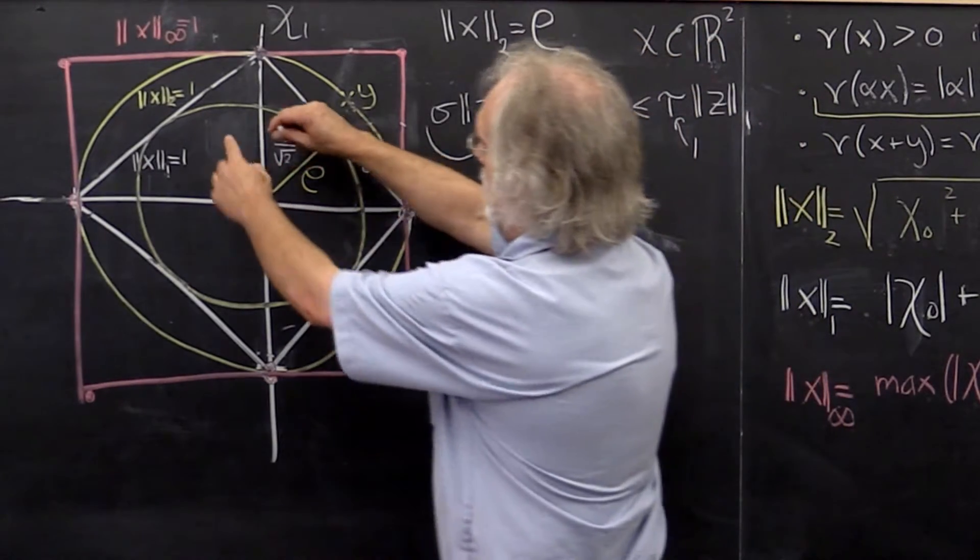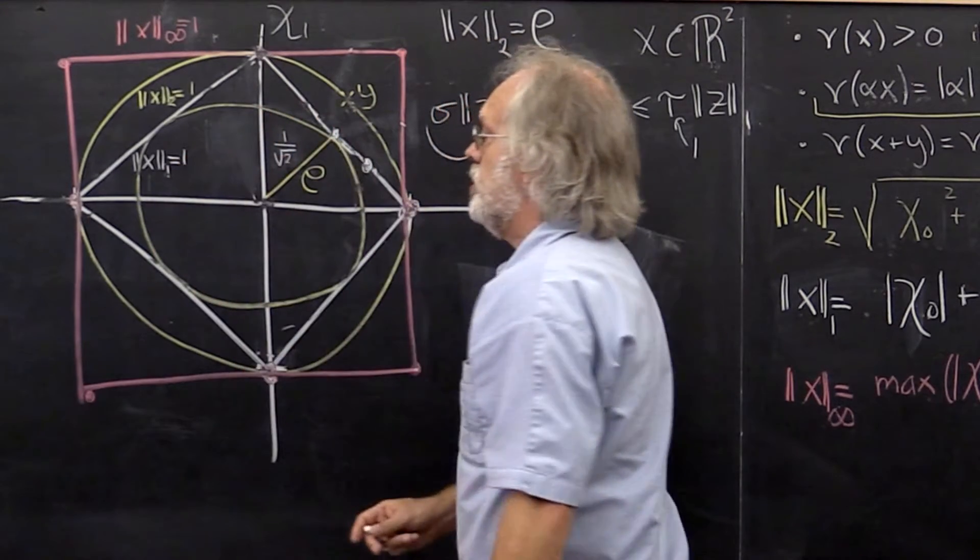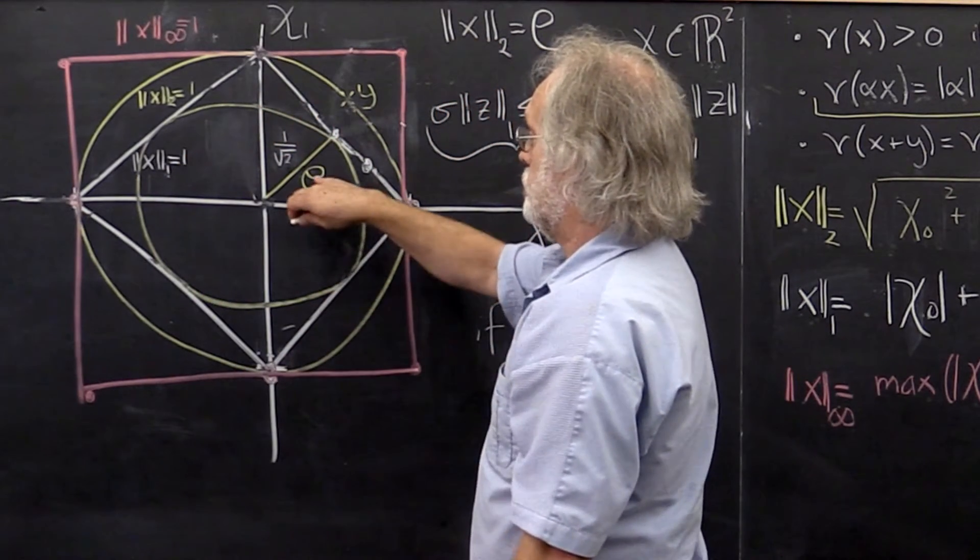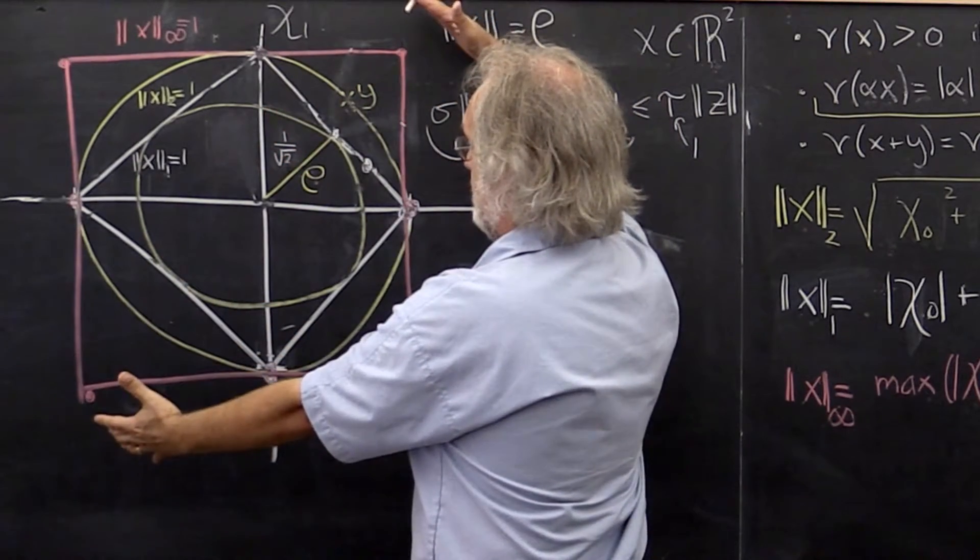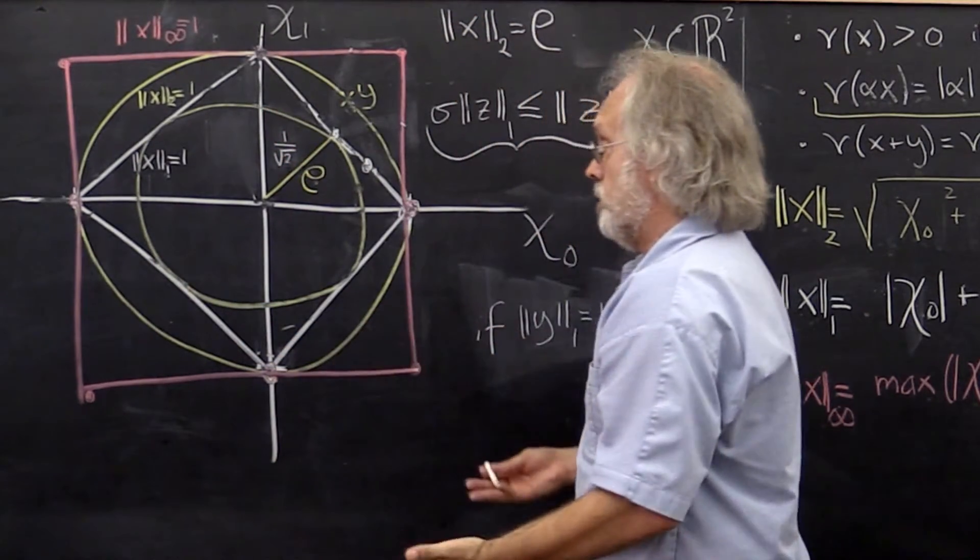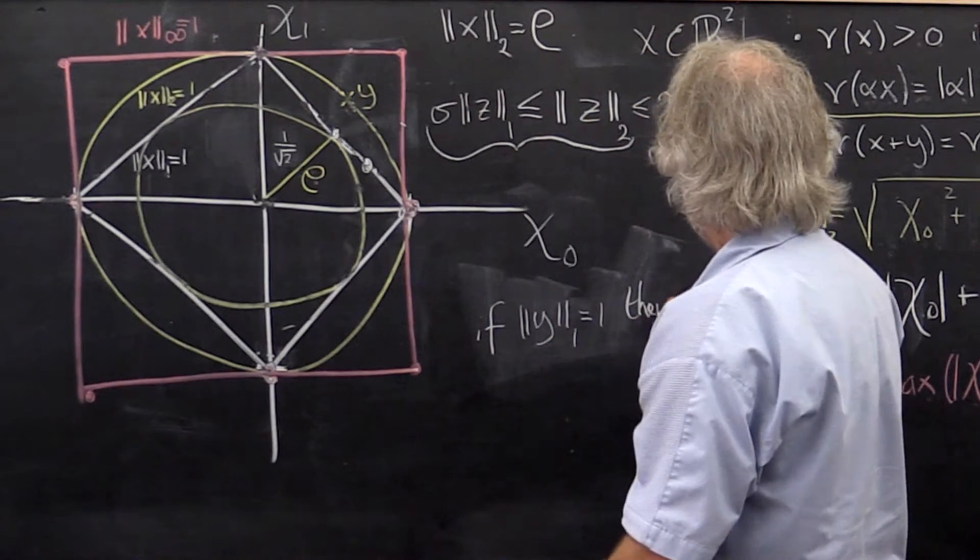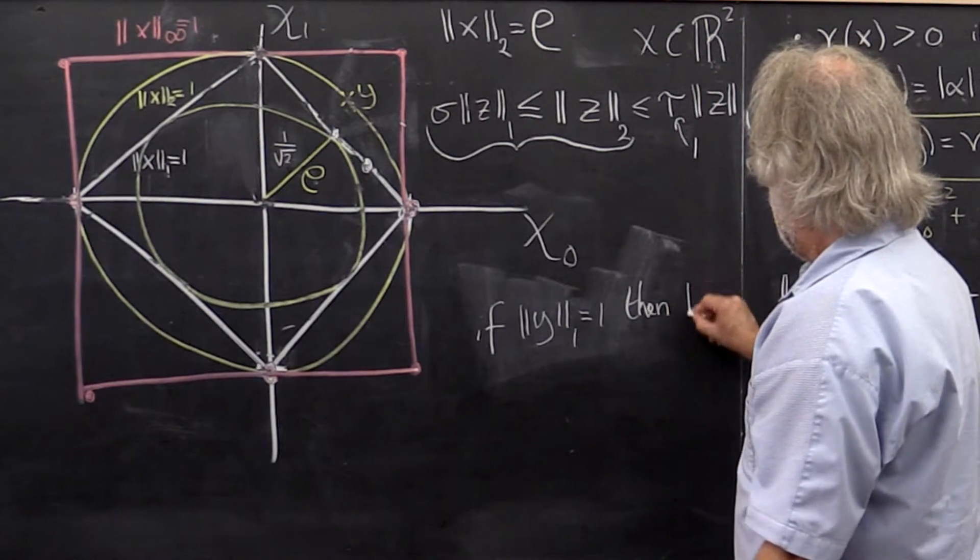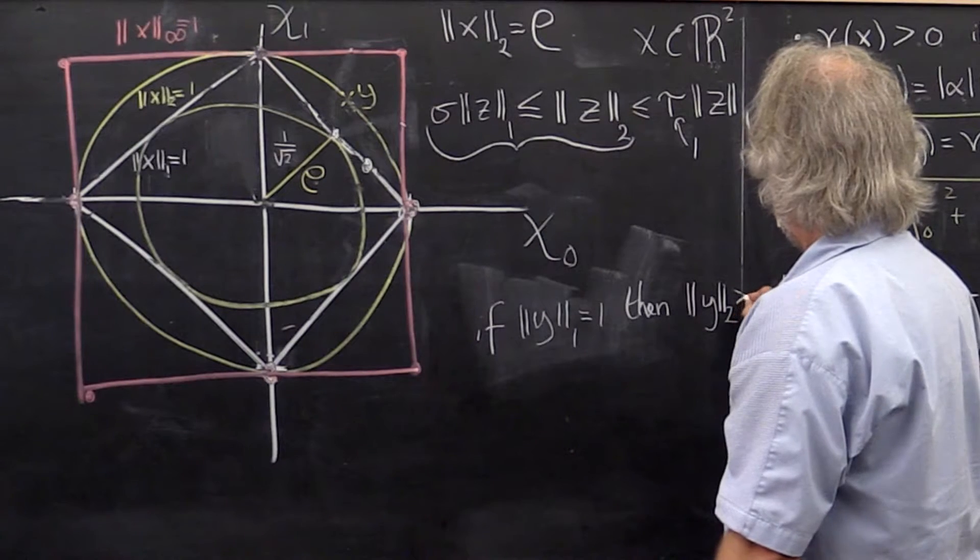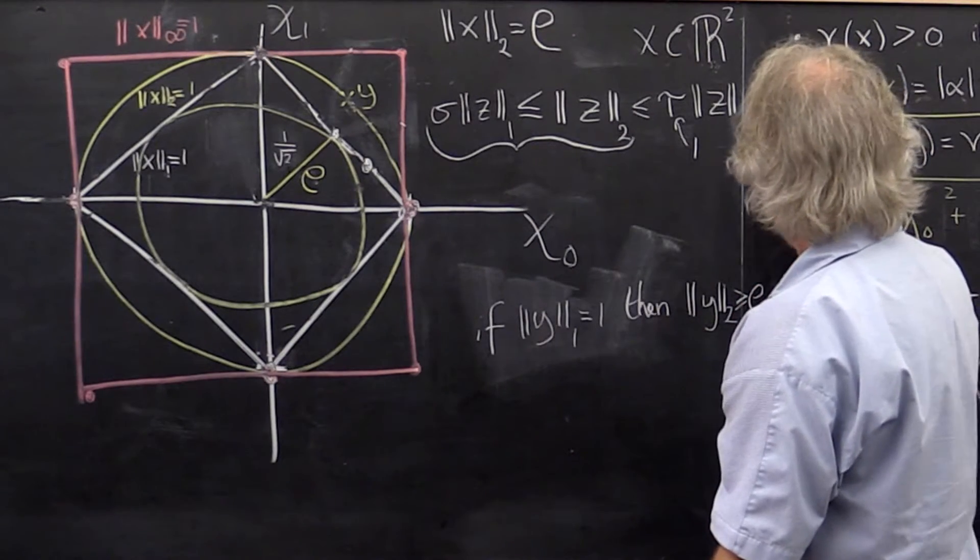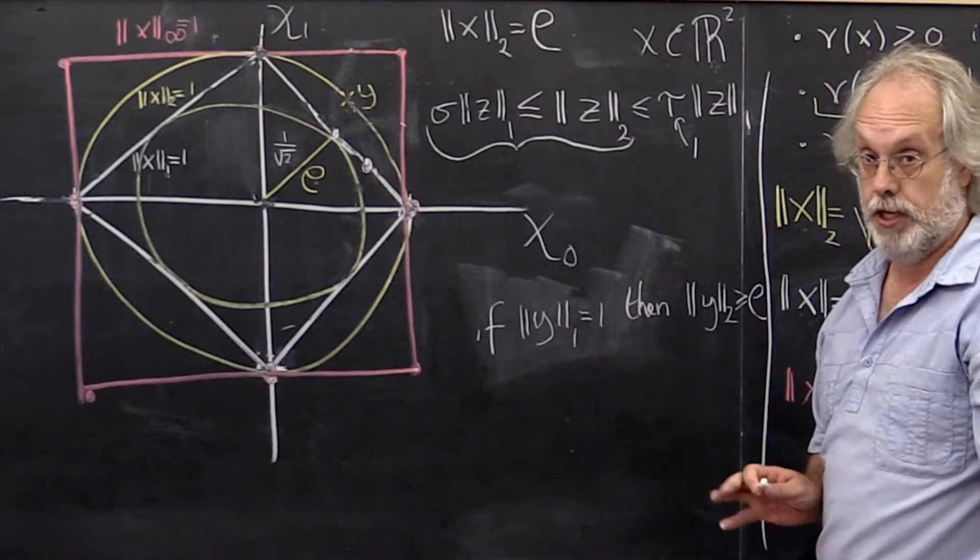Well, this is the set of all points for which the 2-norm is equal to rho. For any point outside of that, the 2-norm is greater than rho. So we can say then the 2-norm of y is greater than or equal to rho.